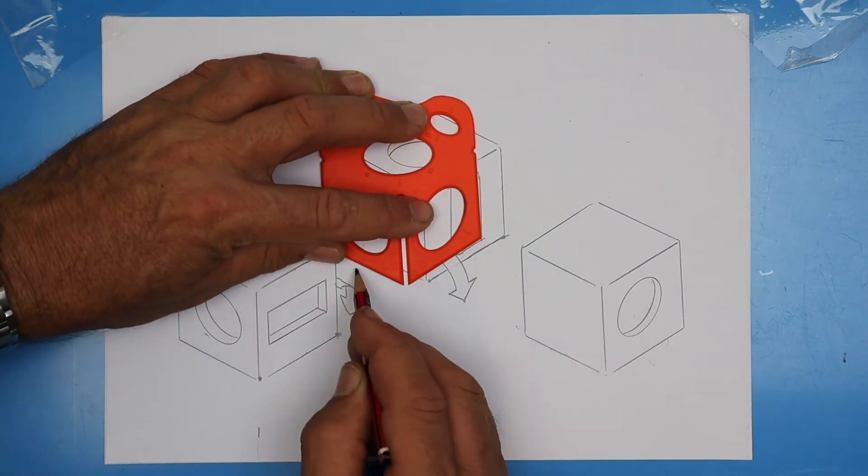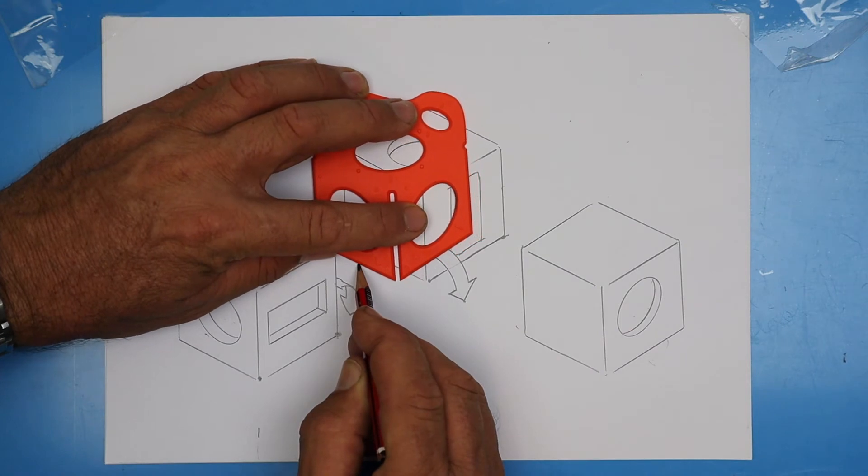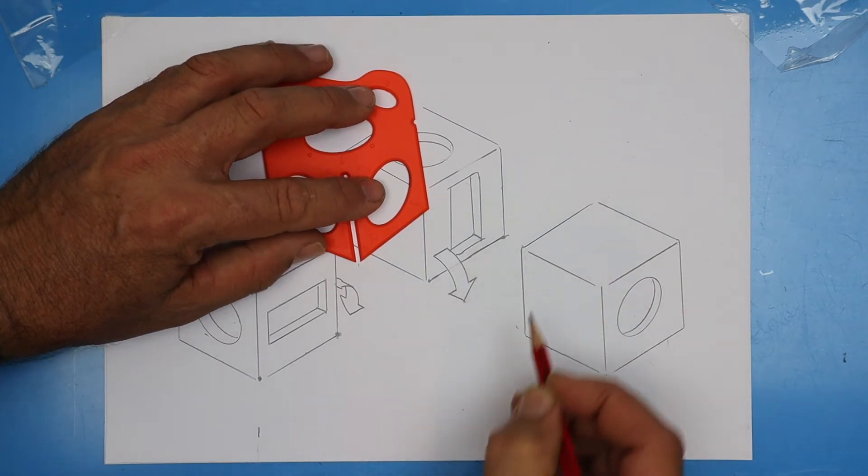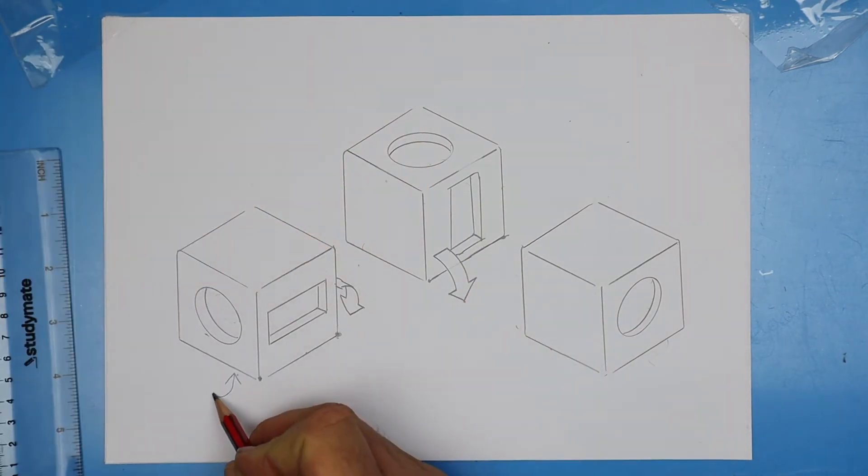We're going to do the same thing. Slide, copy those two lines, and then mark in the little corner.